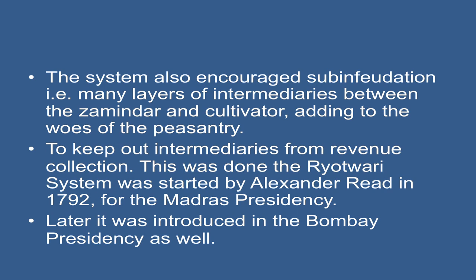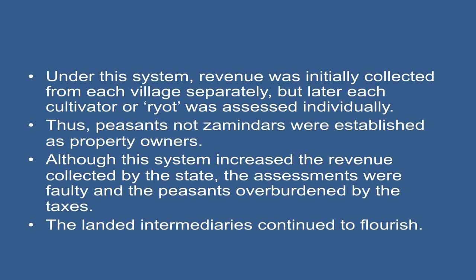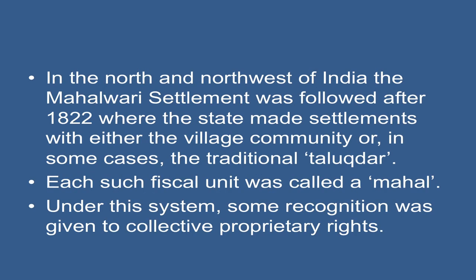To keep out intermediaries from revenue collection, the Ryotwari system was started by Alexander Reed in 1792 for the Madras Presidency, and later introduced in the Bombay Presidency as well. Under the system, revenue was initially collected from each village separately, but later each cultivator or ryot was assessed individually. Thus, peasants — not zamindars — were established as property owners, although the system increased revenue collected by the state. The assessments were faulty and the peasants overburdened by the taxes.